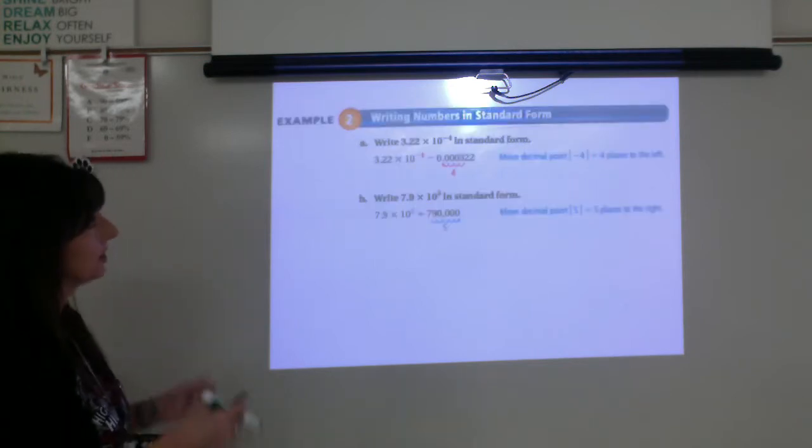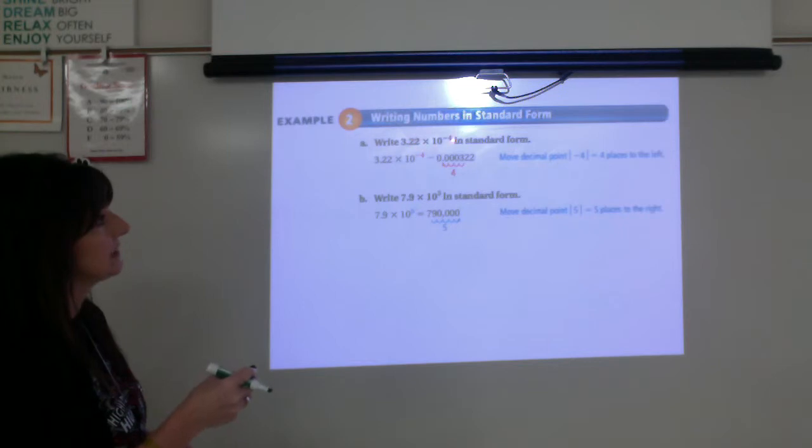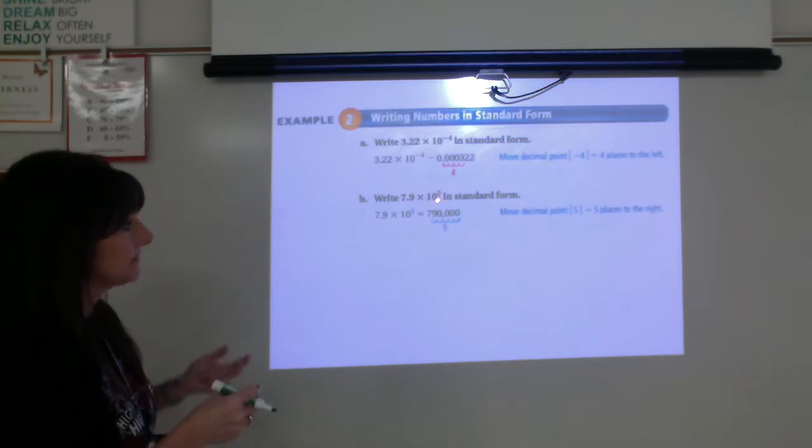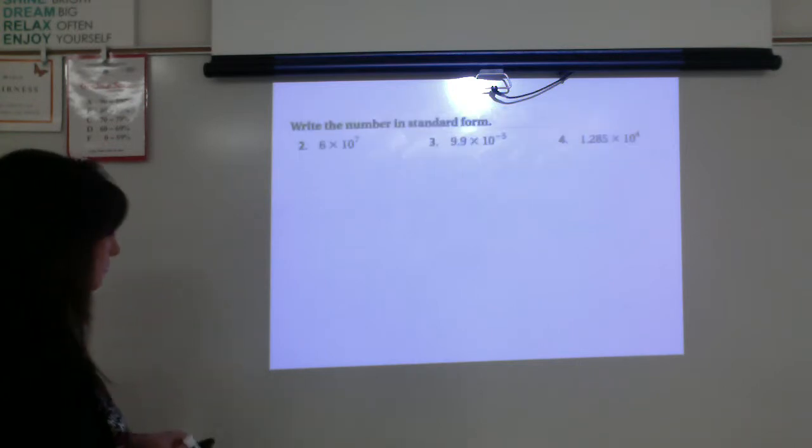So in your book, writing it in standard form, 3.22 times 10 to the negative 4. Since this is a small number, we will start with the decimal right here between the 3 and the 2, and we will move 4 places to the left and fill in the zeros. Since 5 is telling us it's a large number, we want to move the number to the right so that we can get 790,000. So let's give a few of these a try.